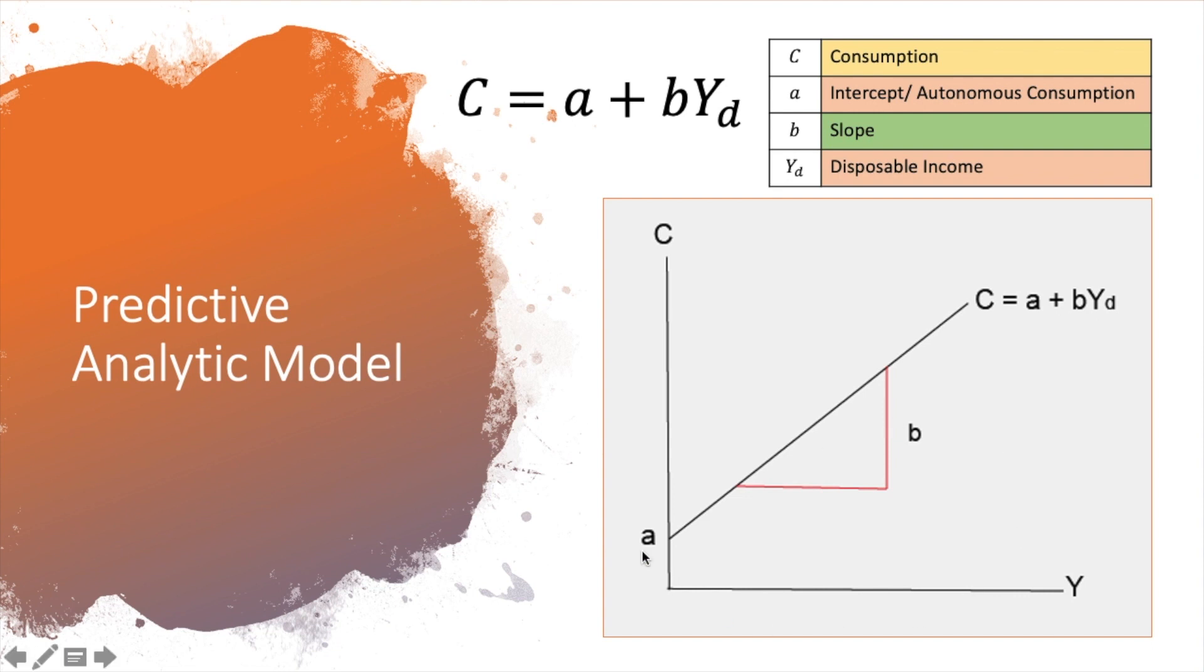So you can see if you refer to this diagram here, you can clearly see if Y here, which is the disposable income, if Y is zero, there will still be consumption taking place.